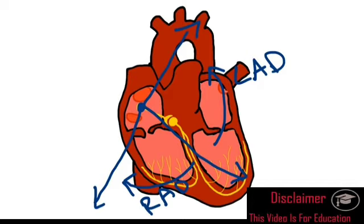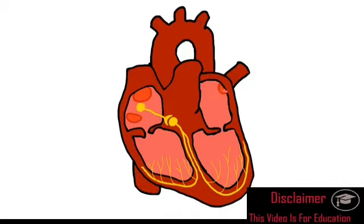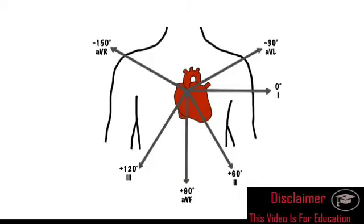That's a quick and easy way to remember it — just imagine yourself standing on the sinoatrial node looking in the direction of the electrical activity. Now let's have a look at how this plays into the ECG.